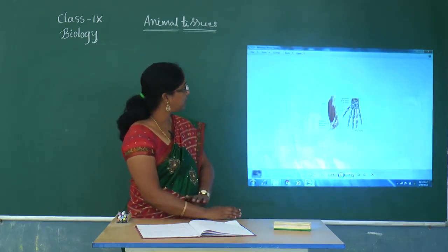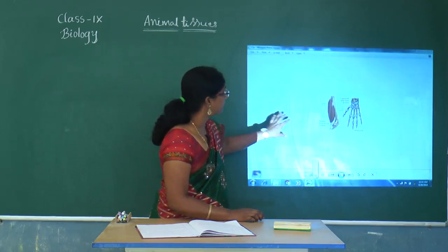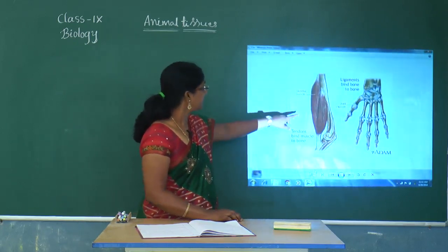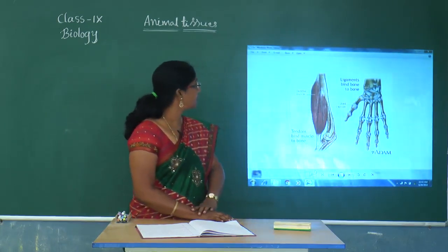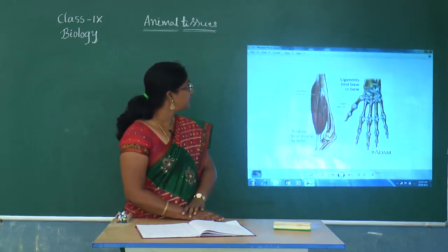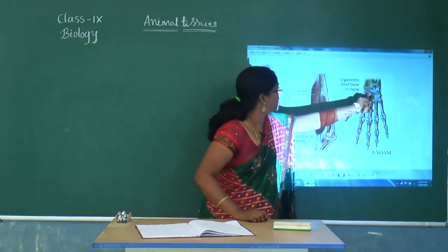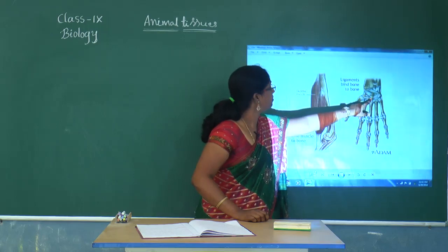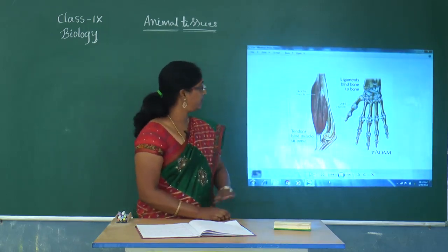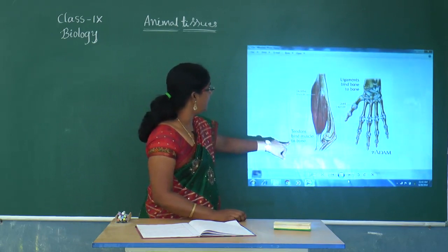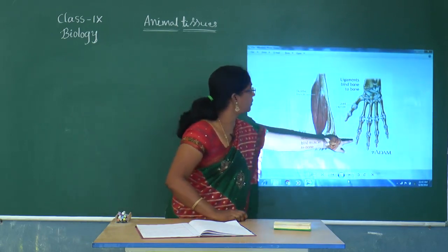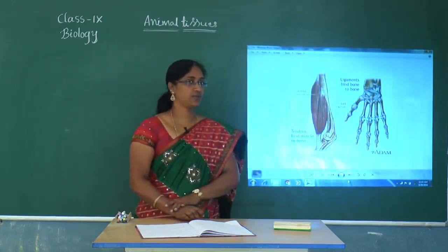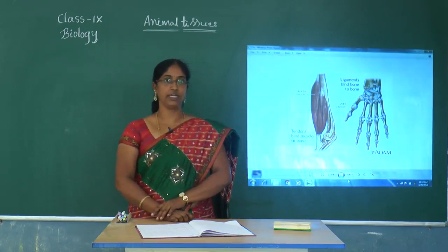Coming to ligaments and tendons — ligaments have fiber-like projections that help attach bones at joints. These fibers are made up of a protein called collagen. Tendons connect muscles to bone. Because of ligaments and tendons, we can fold our joints; otherwise, folding would be very tough.